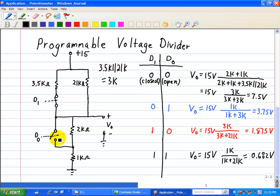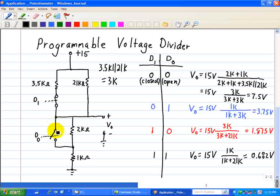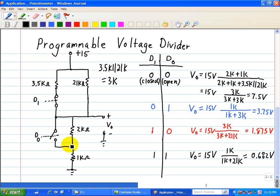So when D0 is closed, we bypass this 2 kiloohm resistor because this has a smaller resistance than the 2k and acts like a short. And now we have a 1 kiloohm resistor, which will be a result of that output right here.